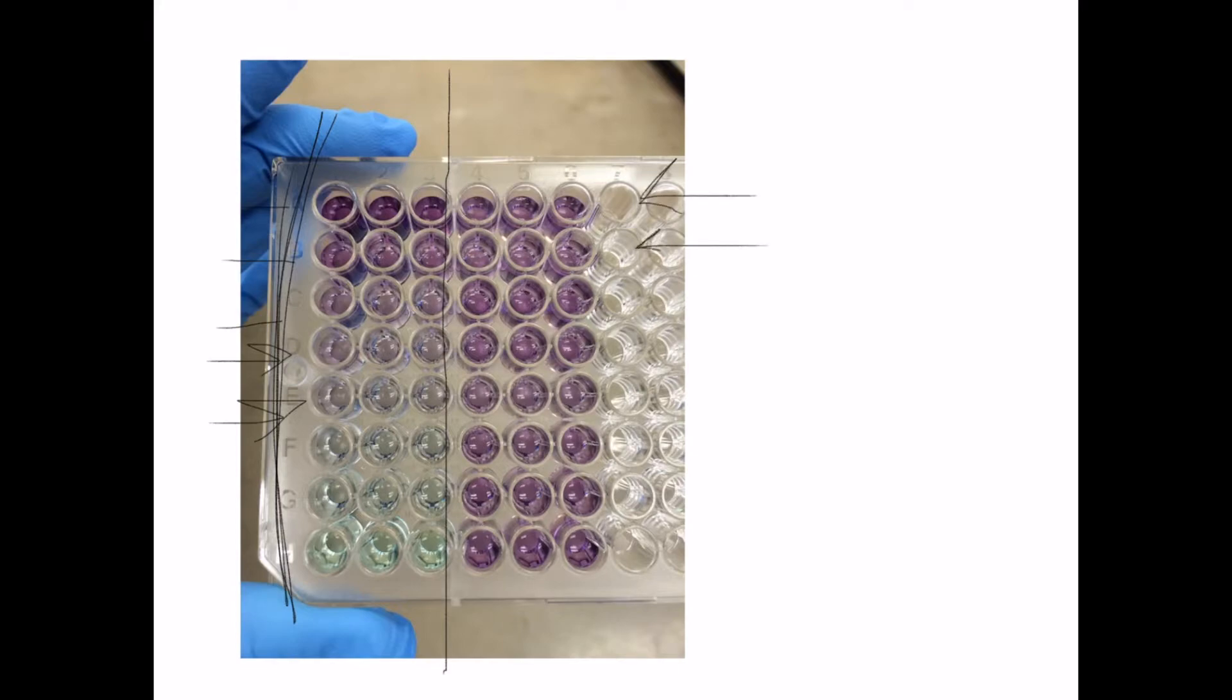So the reason some of these are purple is because when you add it initially, it turns green, but when you add something called a working reagent, which is what makes the BCA assay work, it stains the solution purple, and the more protein there is, the more purple it turns the solution.